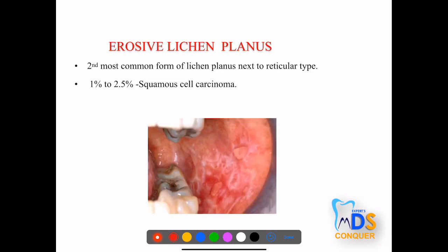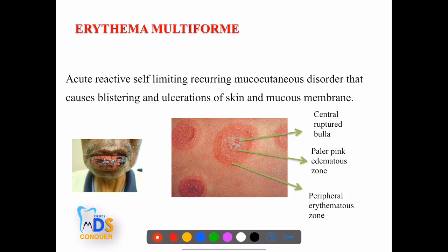The next pre-malignant lesion is erosive lichen planus, which shows an erythematous area with peripheral striae. It is the second most common type after reticular, and carries a 1 to 2.5 percent risk of squamous cell carcinoma. Erythema multiforme shows target lesions — orally presenting as hemorrhagic incrustations of the lips. The target lesion consists of a central ruptured bulla, surrounded by a pale erythematous zone, with a peripheral erythematous zone — the classic bull's-eye appearance.